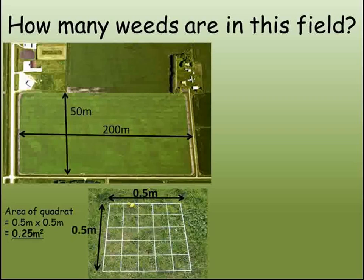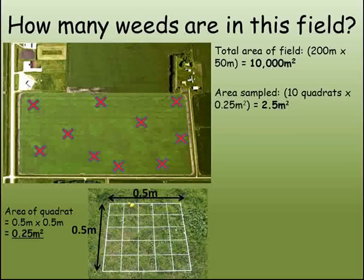For example, if they wanted to know the number of weeds in a field, they would first of all measure the whole area of the field. They would then choose some random points to sample. It's important to select the sample randomly so that you don't choose more interesting areas that will affect your results. The larger the sample, the more reliable and accurate your prediction is likely to be, although of course it will take you more time.